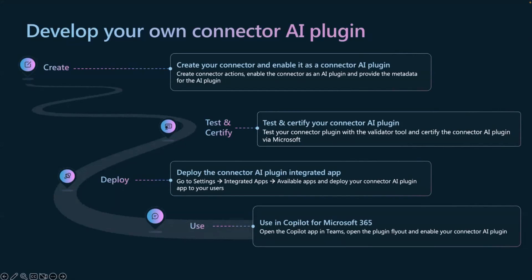If you want to create your own connector AI plugin, you create your connector just like a normal custom connector and enable it as a connector AI plugin. I'm going to show you how that works a little later. You can use the validator tool to try out if your connector is working well as a connector AI plugin — using your own natural language to trigger the connector AI plugin and see if it does the right things. And when you're completely happy with it, you need to certify it. There's a certification process and I'll have a link for that later.